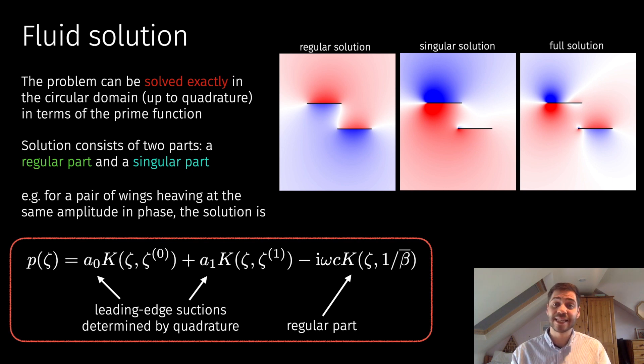In the higher connected case, we don't believe there are special functions for those integrals. At the moment, we're doing numerical quadrature, which is very rapid and really not much slower than the simply connected case. In these plots, I've illustrated the solution for the regular part, the singular part, and then the full part. In the singular solution, you can kind of see the square root singularity going on at the leading edge.